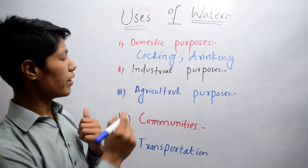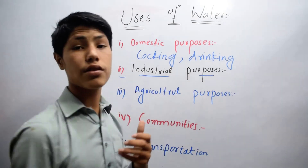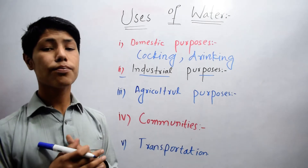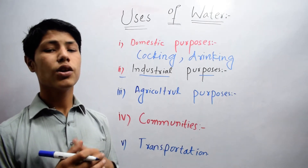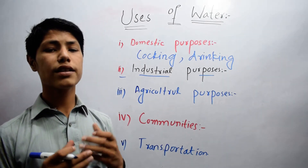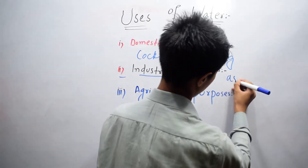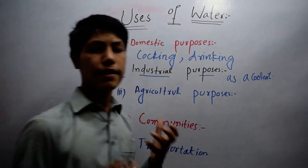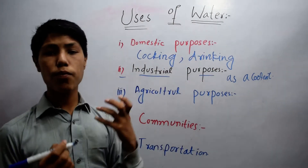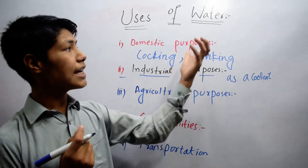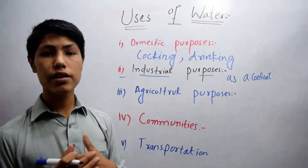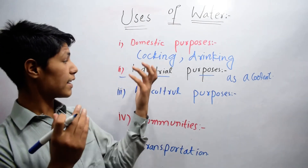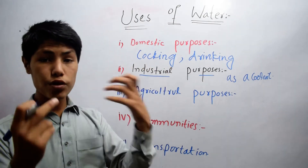The second one is industrial purposes. Water is used for industrial purposes as a coolant. As a coolant, water is used for industrial purposes. In cleaning the agent of industries we can also use water.